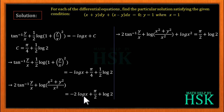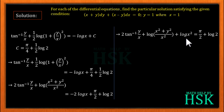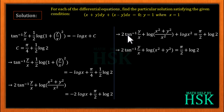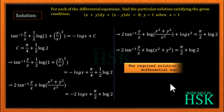The term -2 log x can be written as -log(x²), which moves to the right hand side as log(x²). Then log((x² + y²)/x²) + log(x²) combine using log(m) + log(n) = log(mn) to give log(x² + y²). So the final particular solution is: 2 tan⁻¹(y/x) + log(x² + y²) = π/2 + log 2.